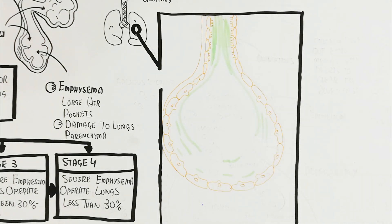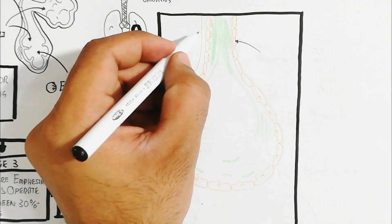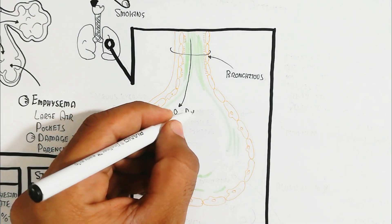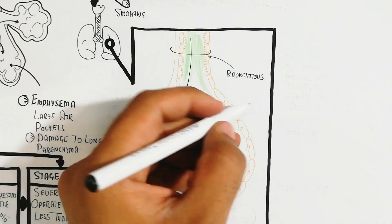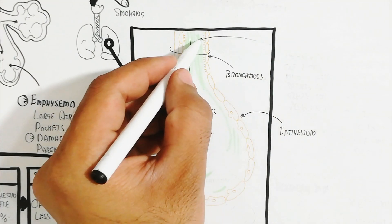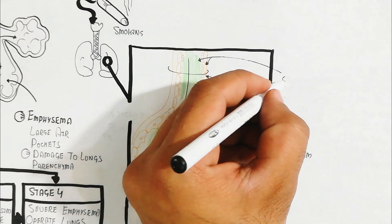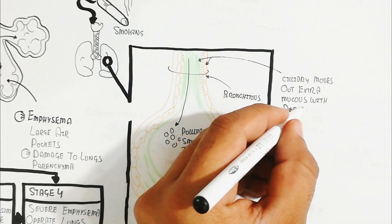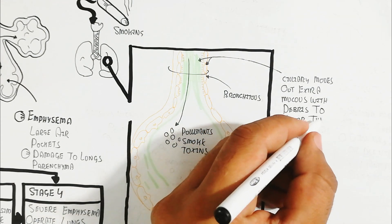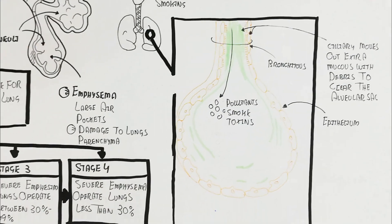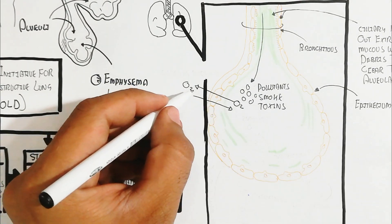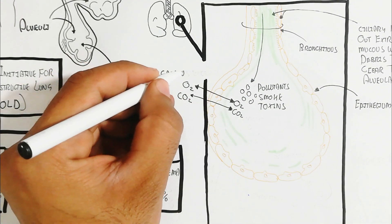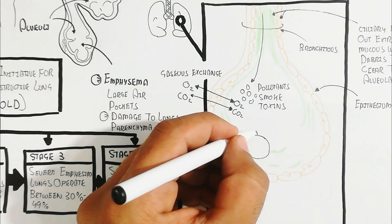Smoking affects the air sac. Bronchitis occurs due to pollutants, smoke, and toxins. Alveolar macrophages undergo endocytosis, and mucociliary clearance of mucus and debris from the alveolar sac decreases.